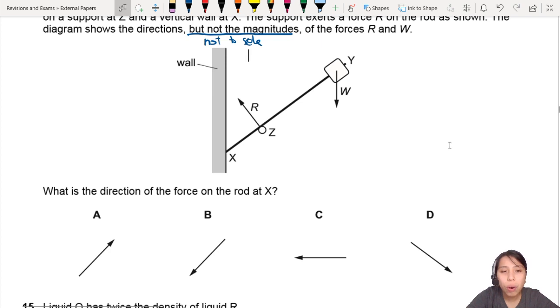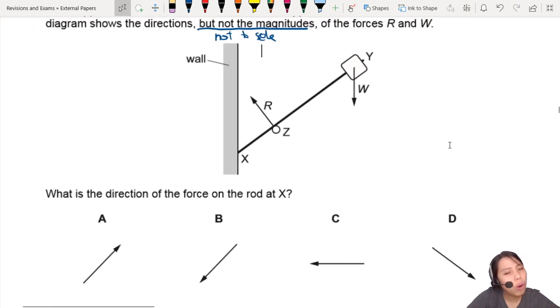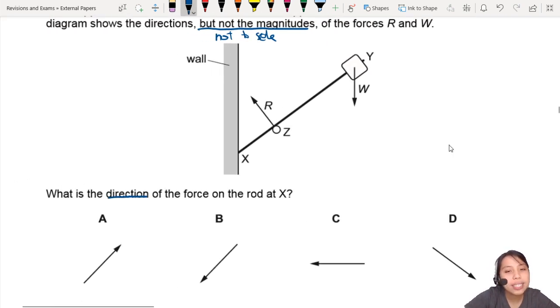We are looking for the direction of the force on the rod at X. So we're looking on the rod, forces on the rod at point X. So point X is right here. So how do we start? How do we know where the force will point?